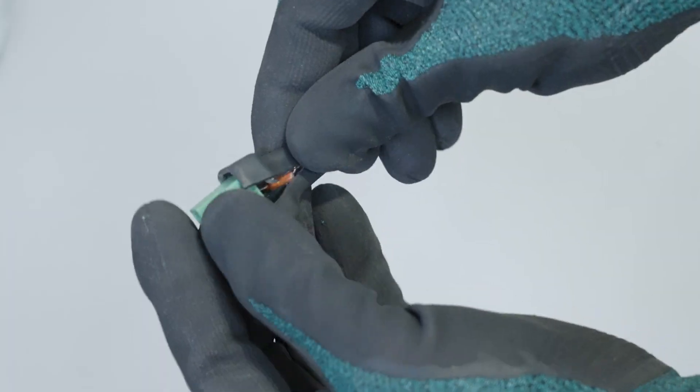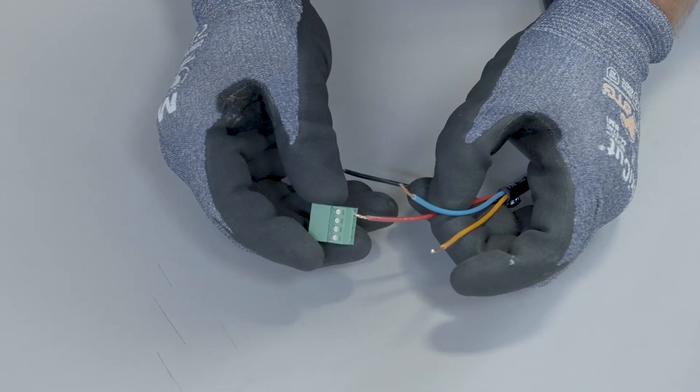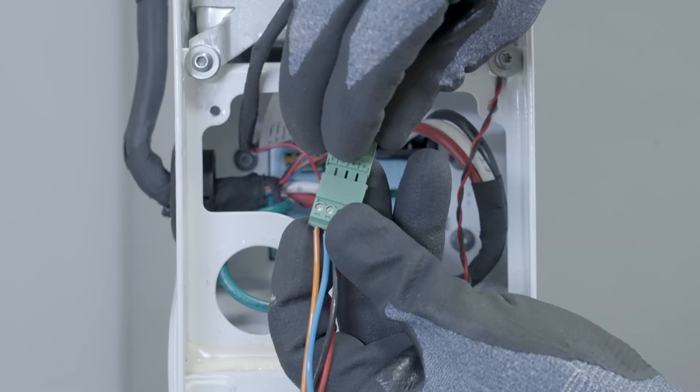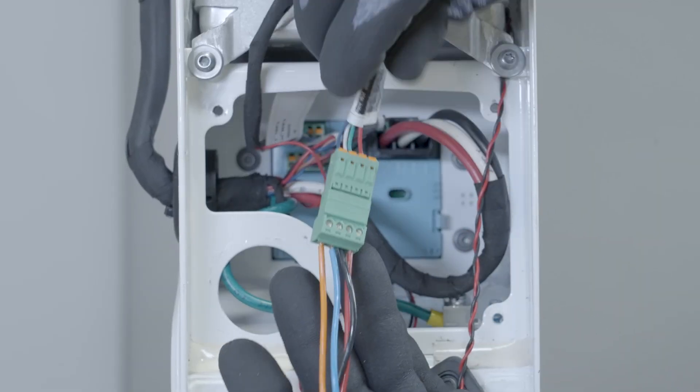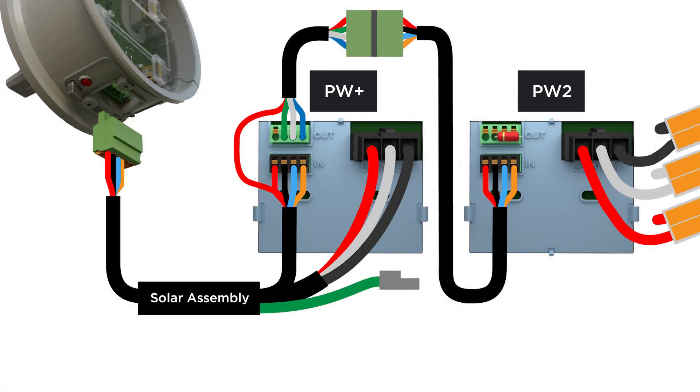Remove the black shrink wrap and discard the resistor. Connect a new four-conductor communication cable to the harness that previously had the end-of-line resistor. Connect the other end of this communication cable to the in port of Powerwall 2.